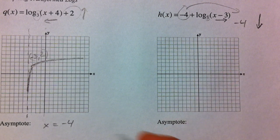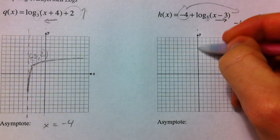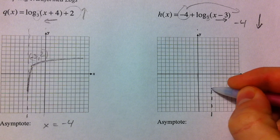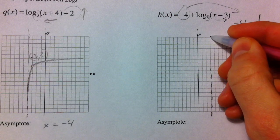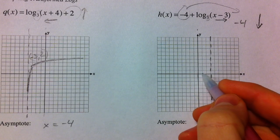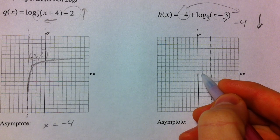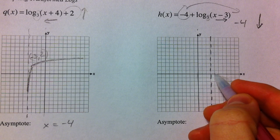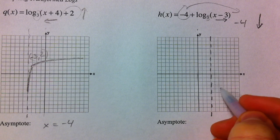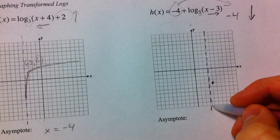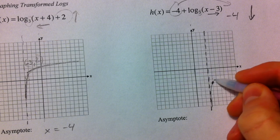So our vertical asymptote was at 0. That is shifted to the right 3. Our x-intercept was at 1. It shifted to the right 1, 2, 3, and it shifts down 4: 1, 2, 3, 4. And so our general graph looks like this.